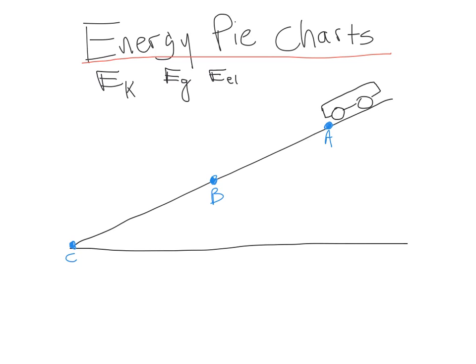What I'm asking for, what I would like for you to try to do, is think about what kinds of energy this little car has at the specific times that I'm looking at — so at locations A, B, and C. I'll put circles down here that will be the pies that we're representing. So I have my three different pies that are going to represent my three different locations: an A, a B, and a C.